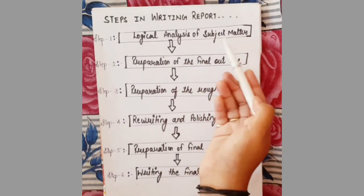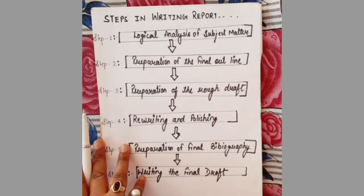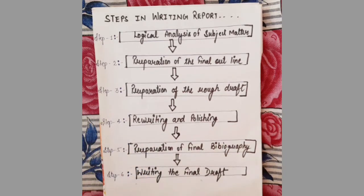The first step is logical analysis of the subject matter. It means that whatever research you have conducted, you perform a logical analysis on its basic subject matter. The main points of your research — how you can show them in the report, and what the cause and effect relationship between those basic points will be — these are the focus areas of logical analysis of subject matter.